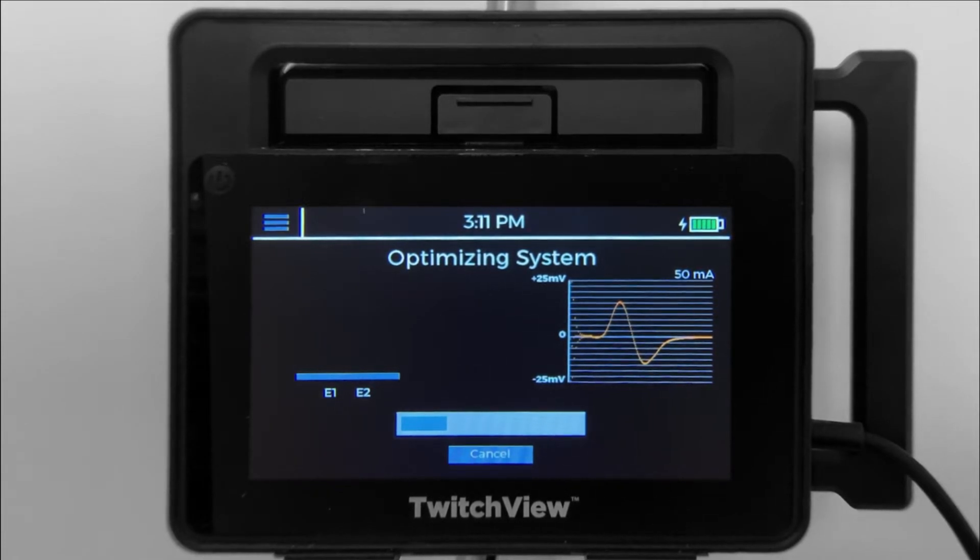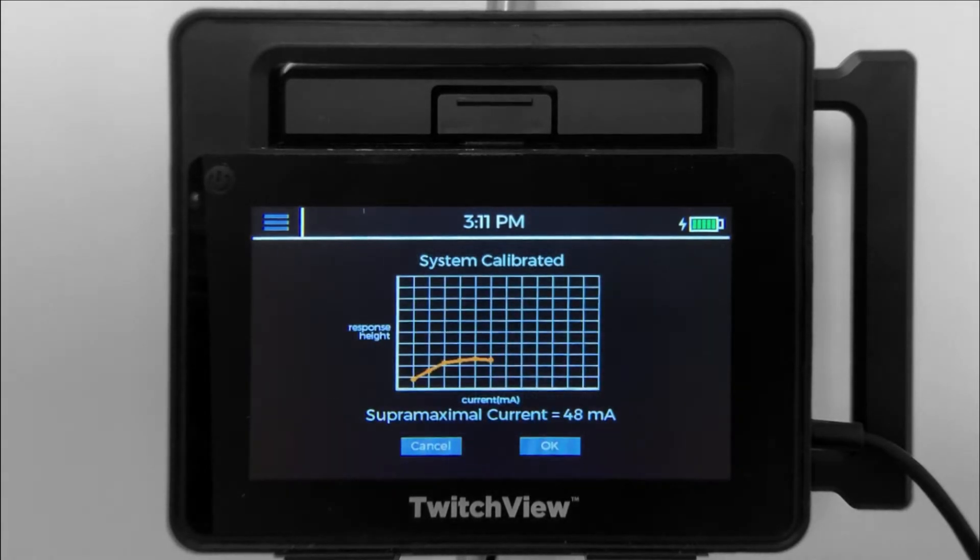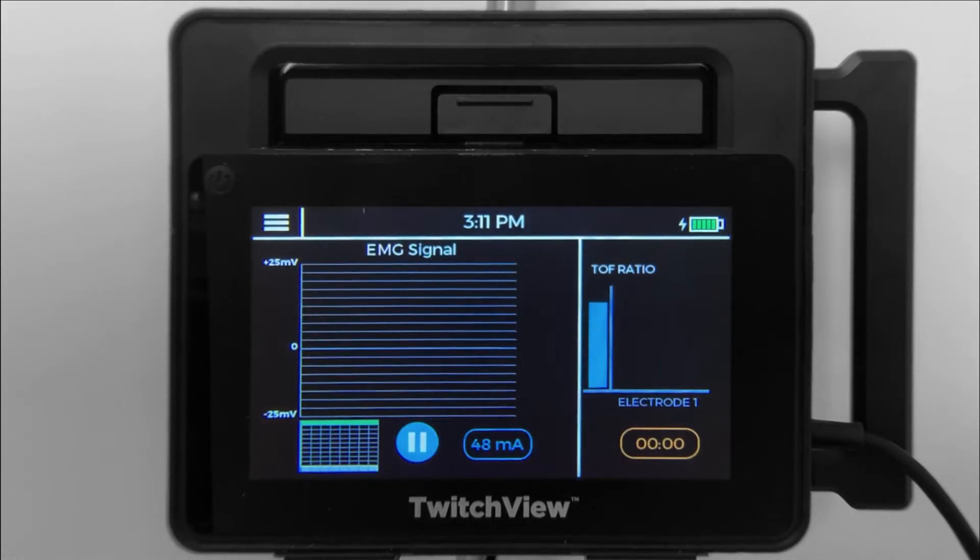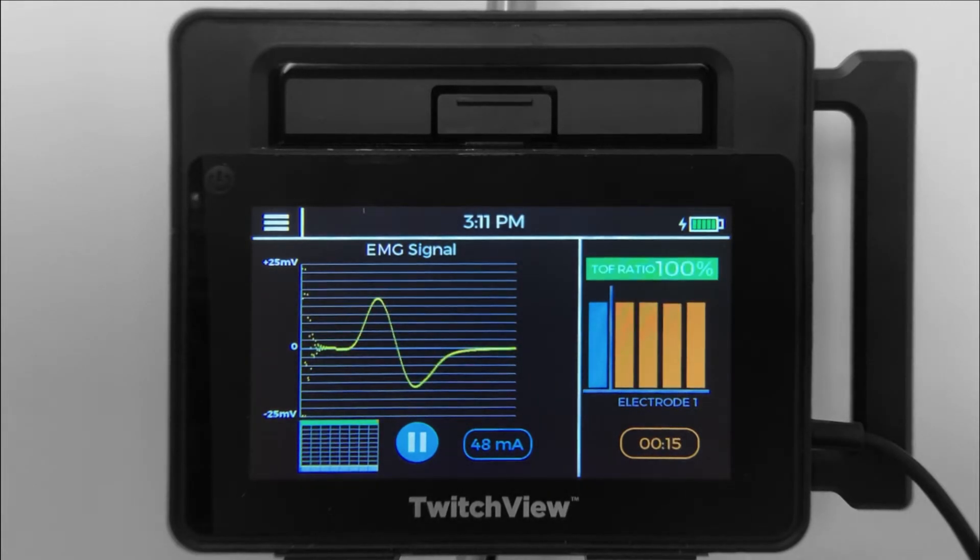The monitor will immediately begin stimulation as it determines which EMG recording electrode provides the best signal, sets the supramaximal current or the optimal stimulating milliamperage, and begins TRAIN-4 monitoring at 20-second intervals.